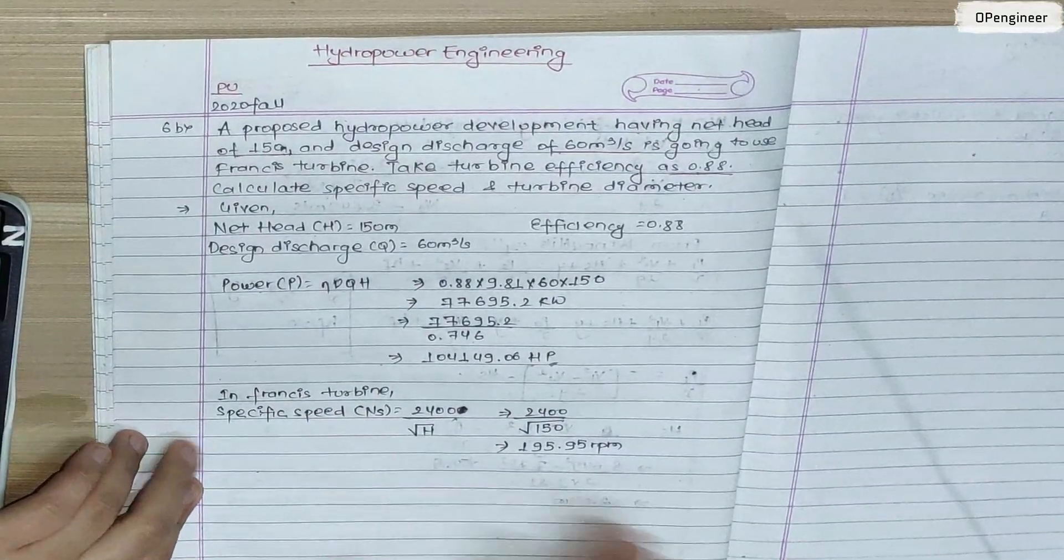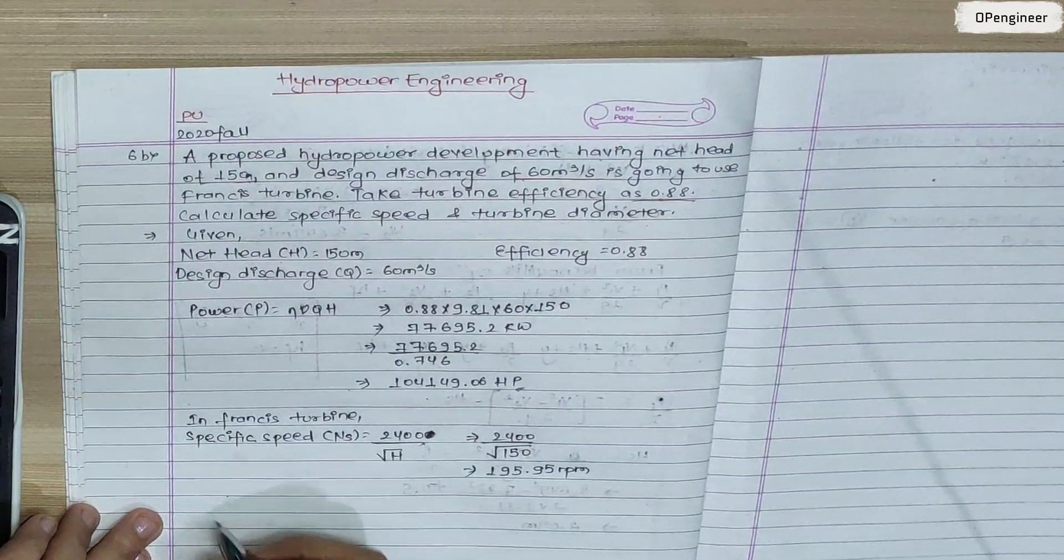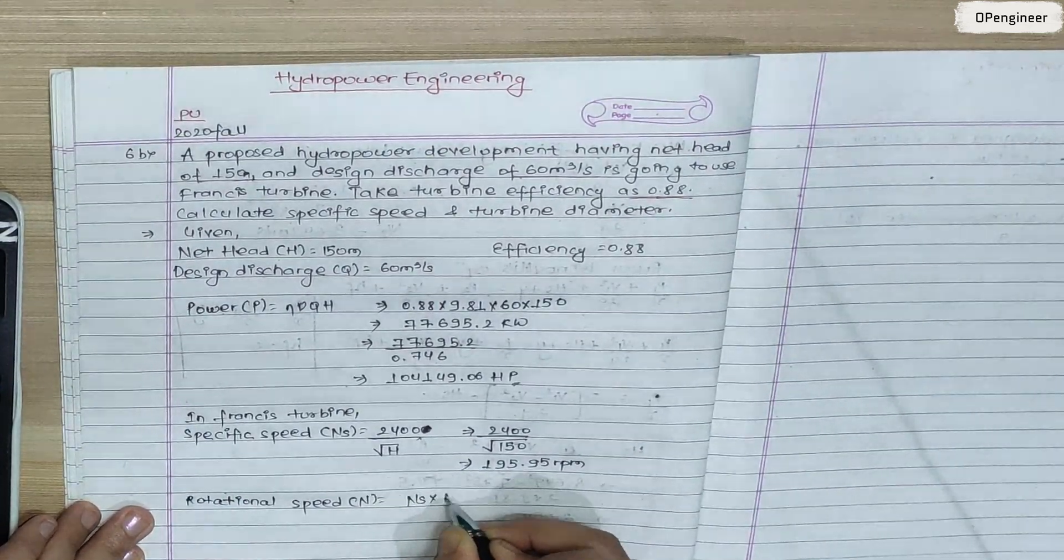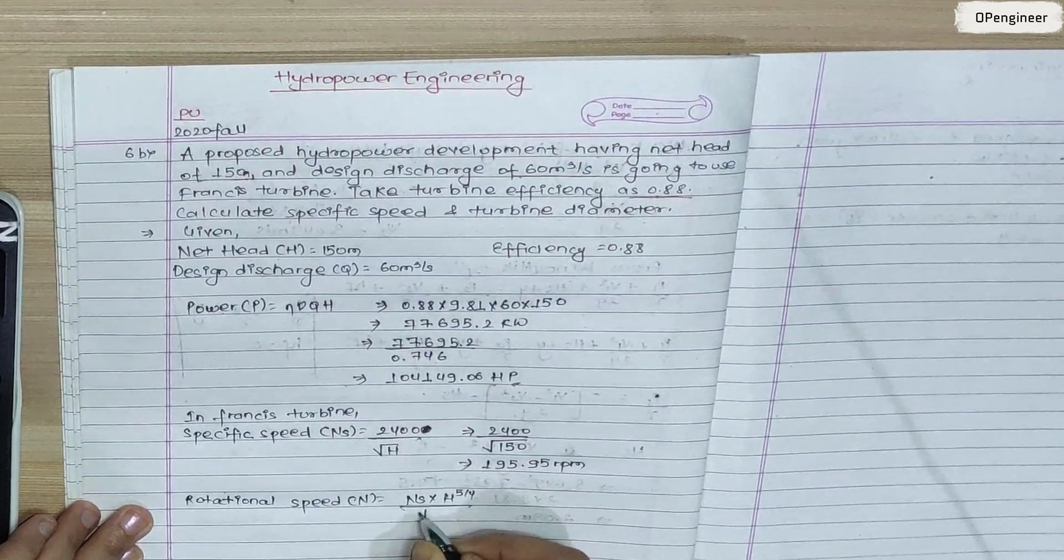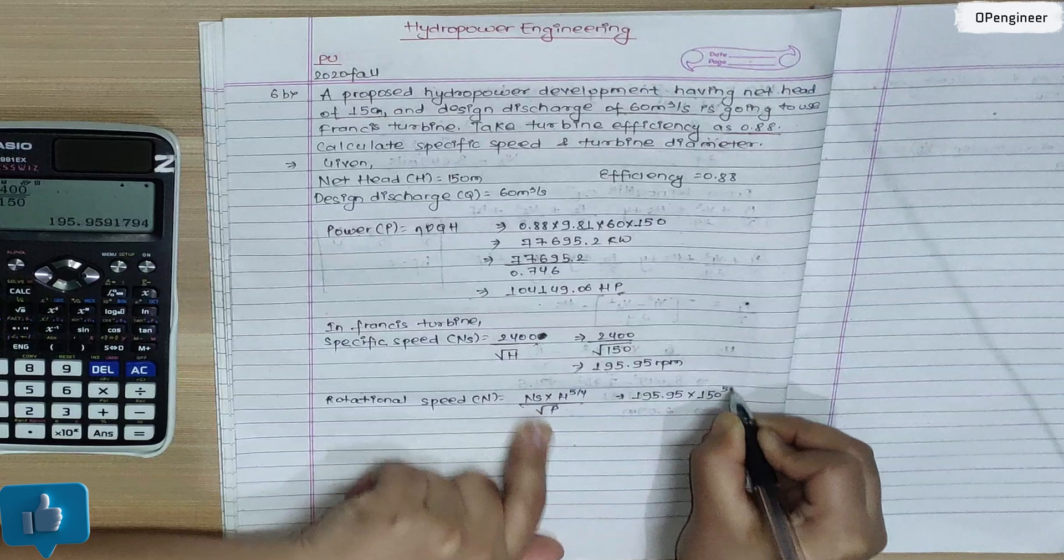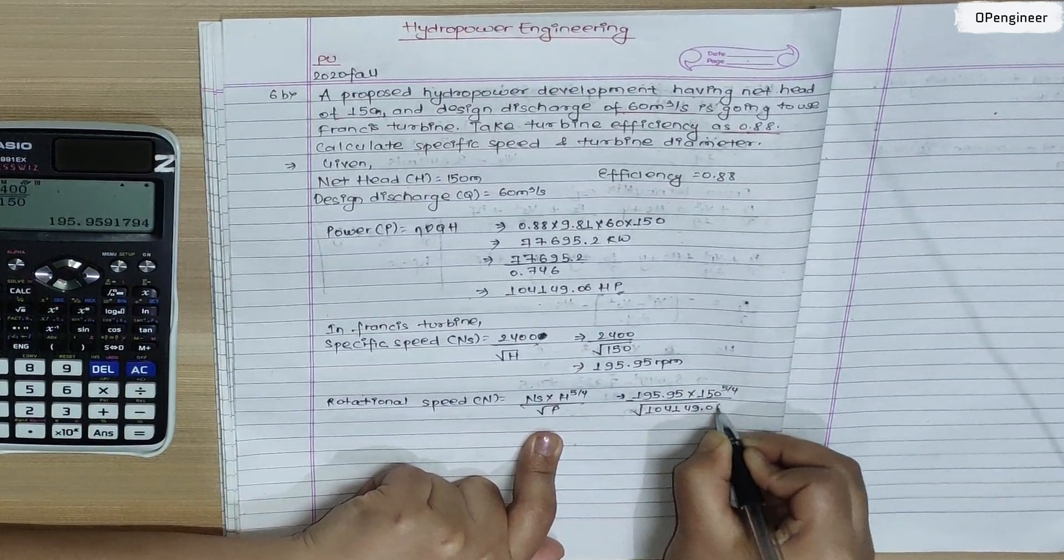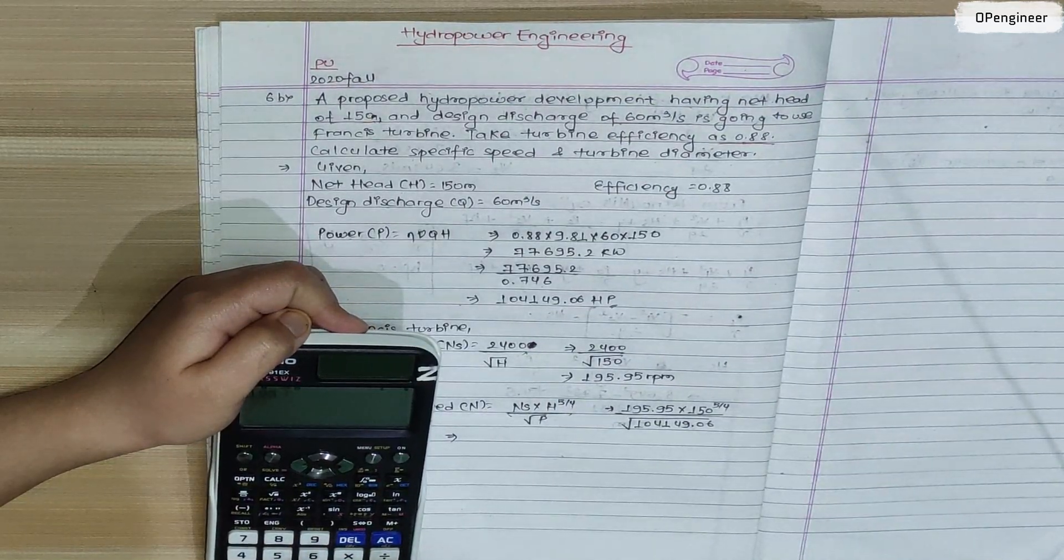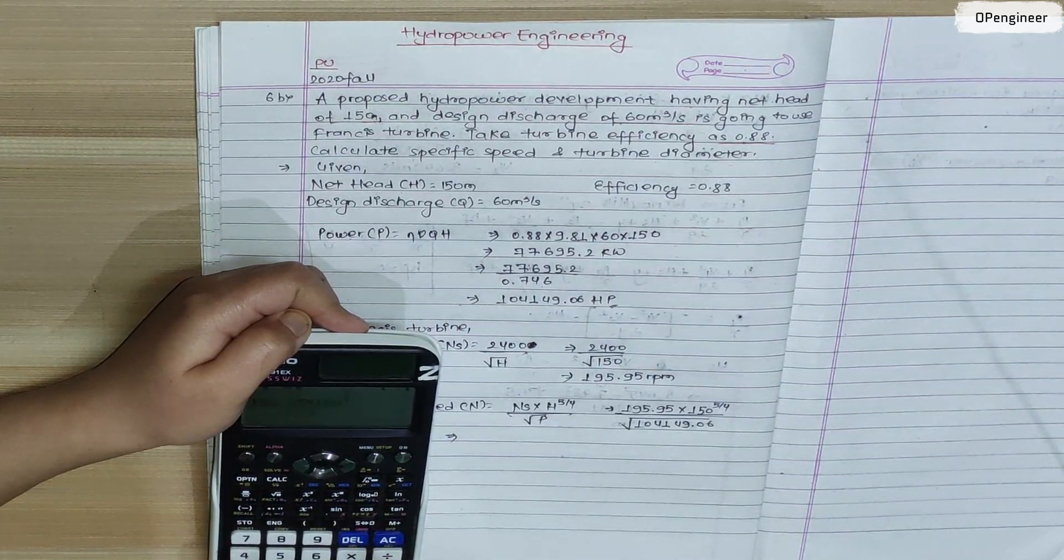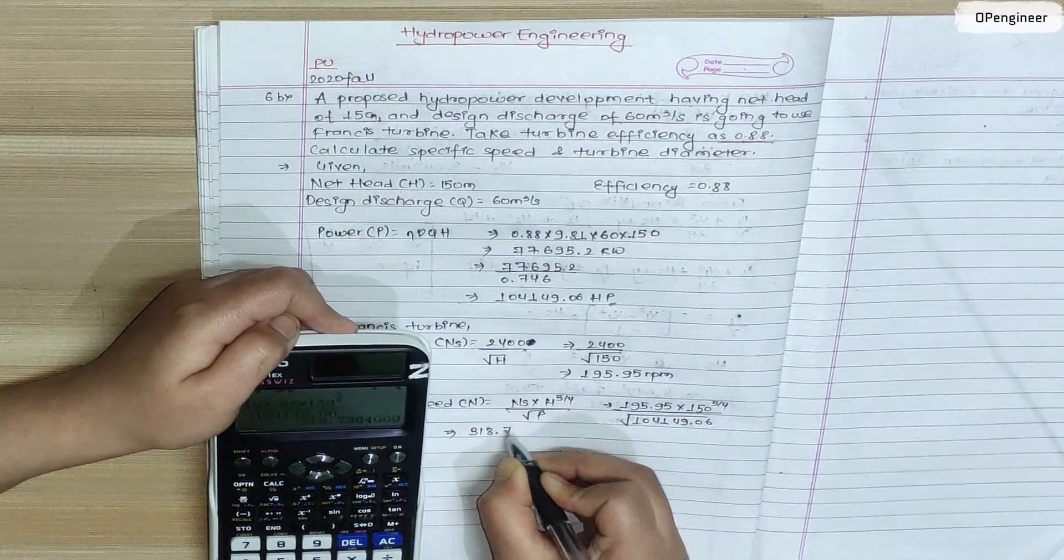If we have specific speed, we can calculate rotational speed. The formula is specific speed into head to the power 5 by 4 over root P. So 195.95 into 150 to the power 5 by 4 upon root over power 104,149.06. Calculate: 195.95 into 150 power 5 by 4 root over 104,149.06, and this is 318.73 RPM rotational speed.